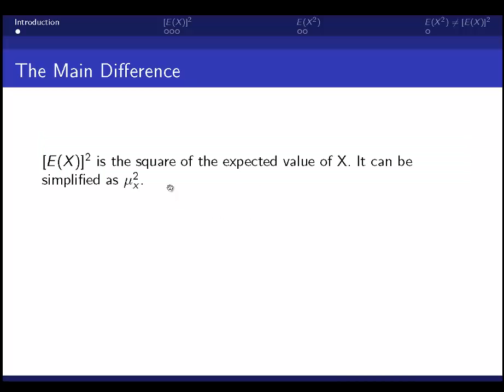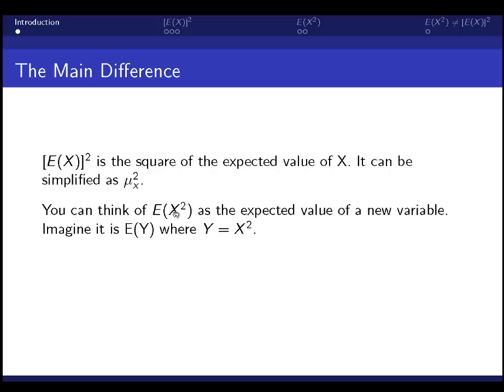The main difference is that if we take the square of the expected value of x, then what we're doing is taking mu of x, the expected value, and squaring it. So when you do E of x squared...